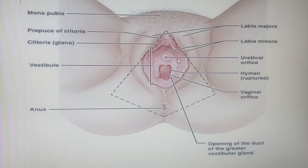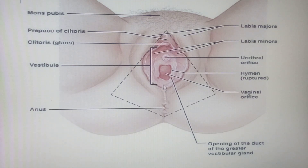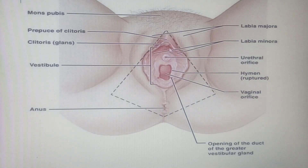The vestibule is located between the glans of the clitoris anteriorly and the posterior labial commissure — more specifically the fourchette — posteriorly. It is enclosed by the labia minora. Into the vestibule of the vulva, certain structures open.